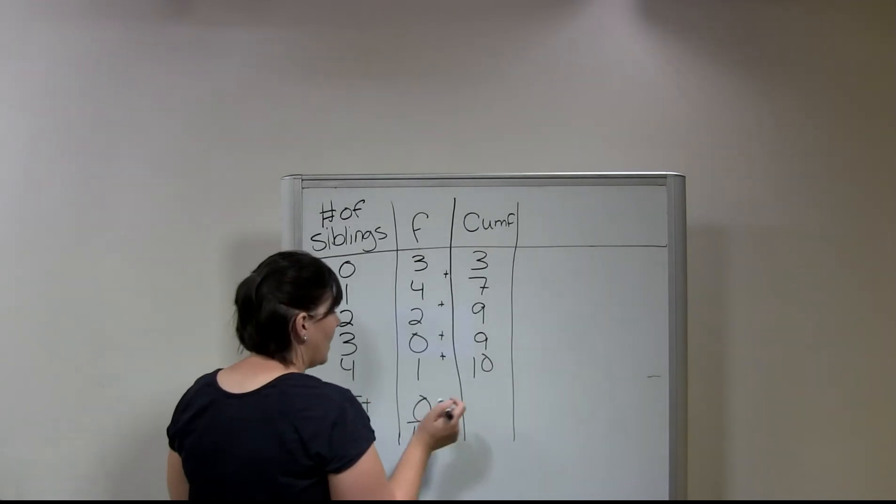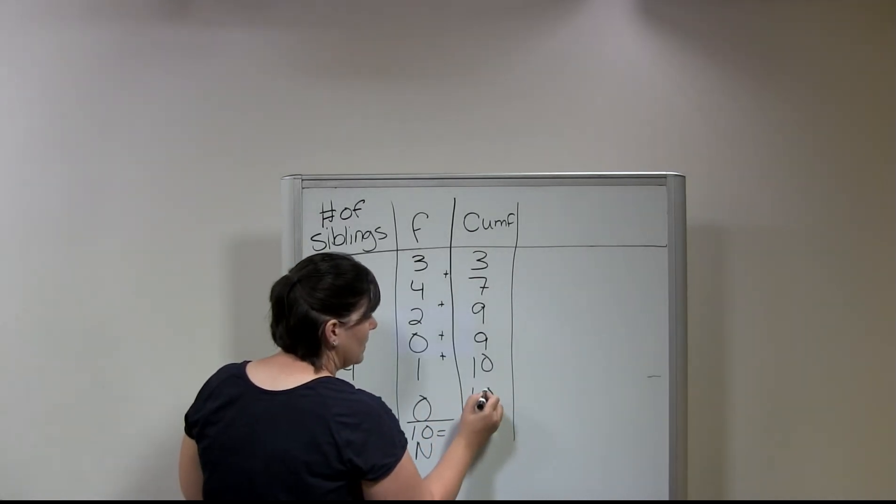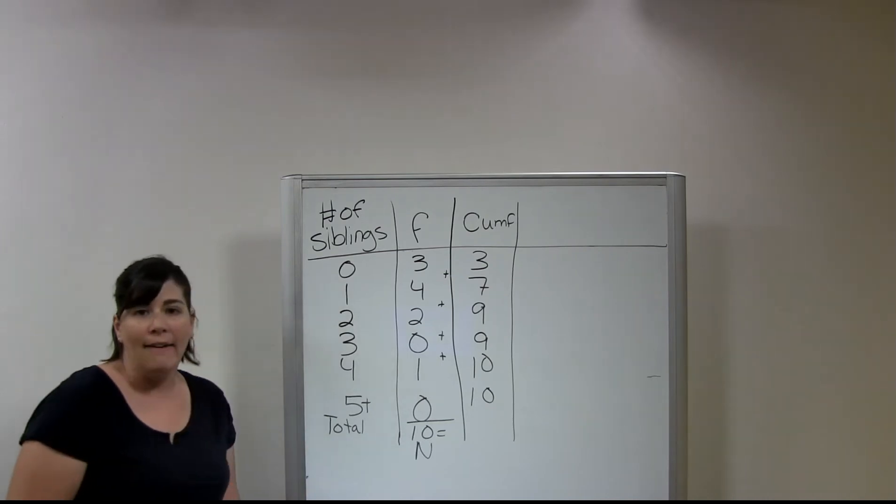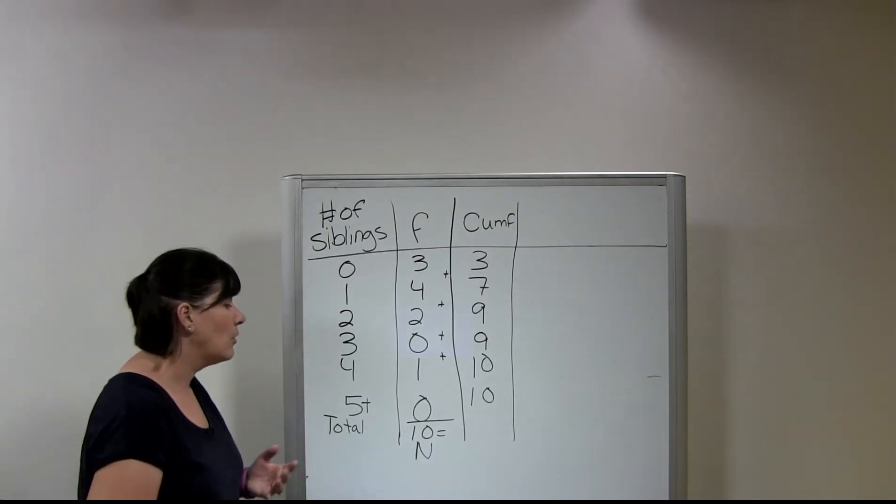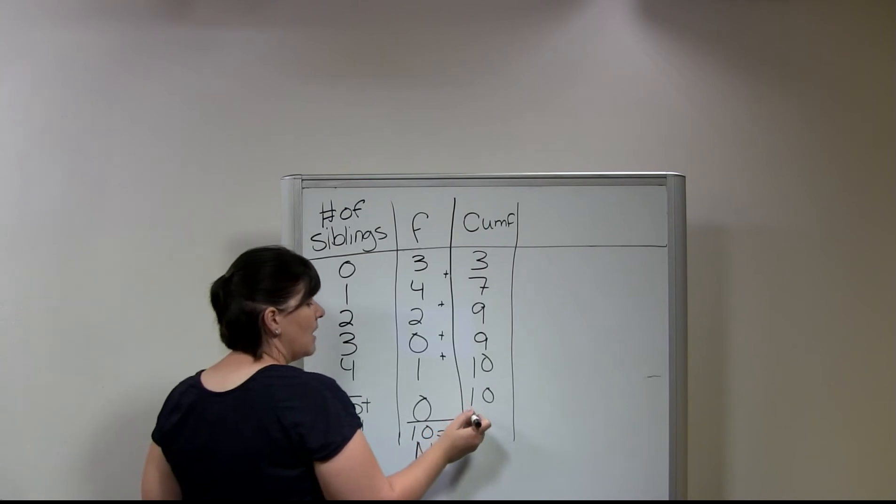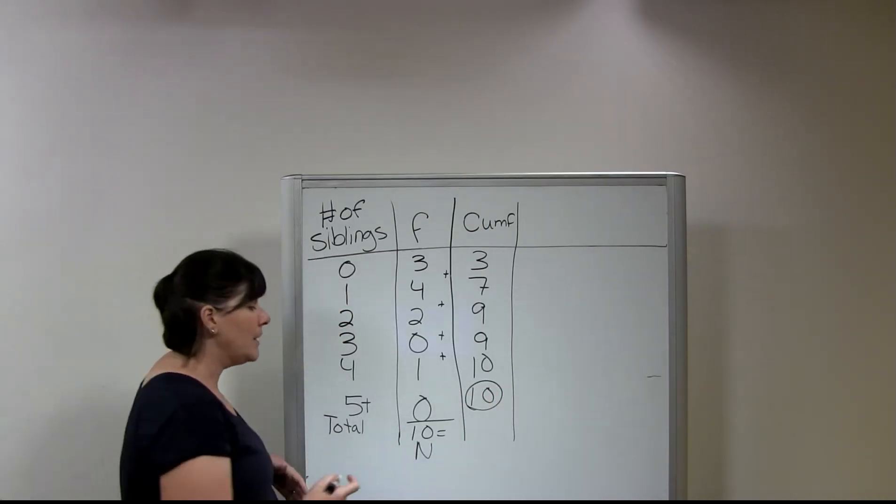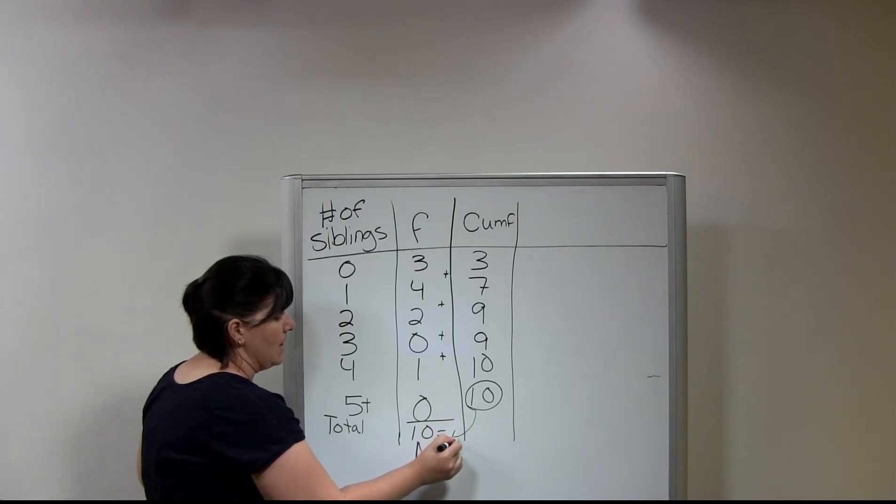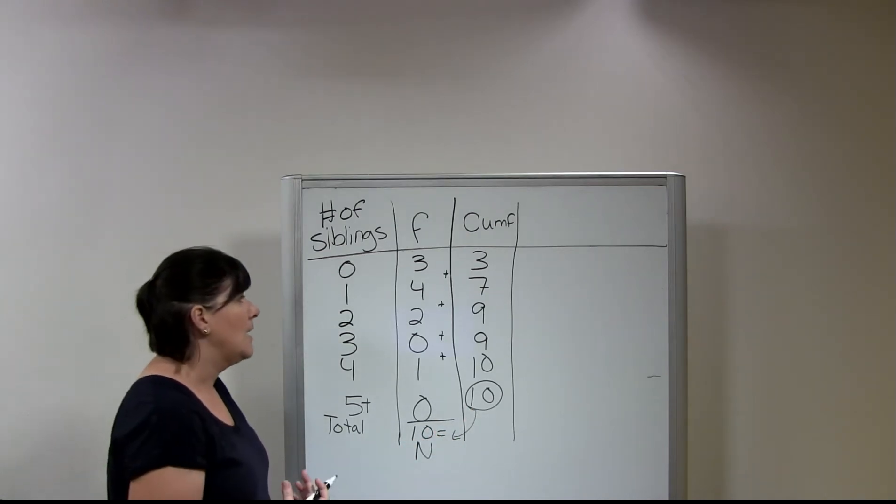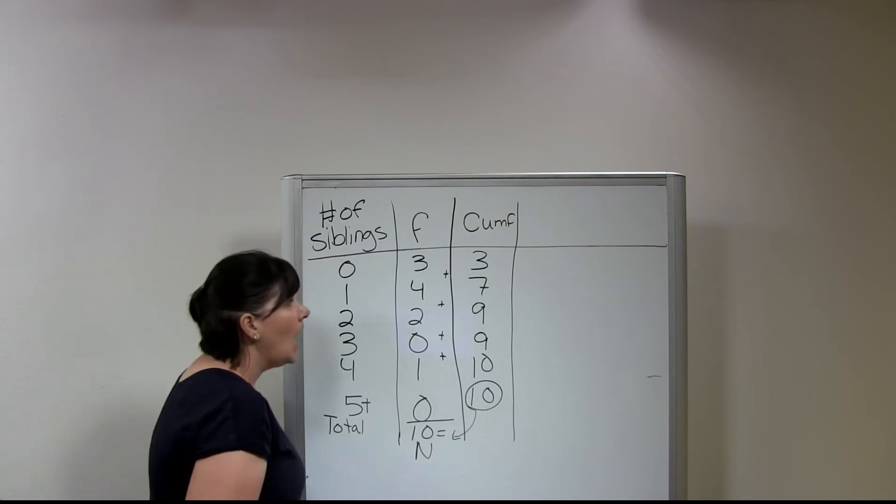And then for my last category of five plus, we're adding zero once again. And so we're still going to have ten. So this is a running total. Your number here in this last category should always be the same as your N. You should always have the same number there if you've done it properly.